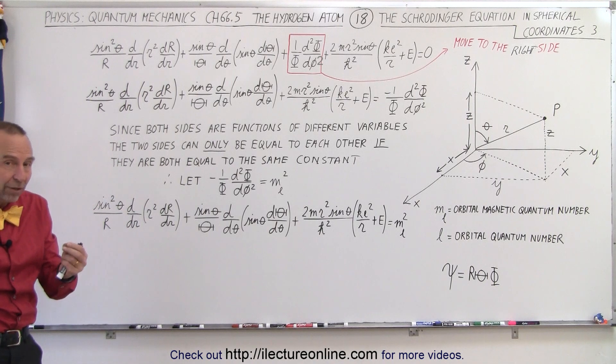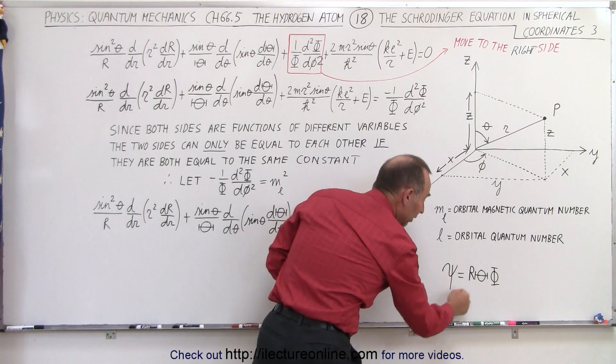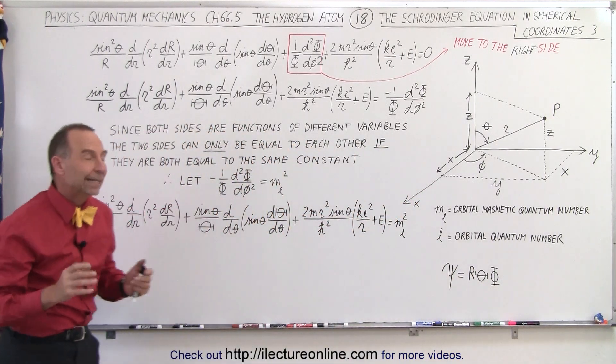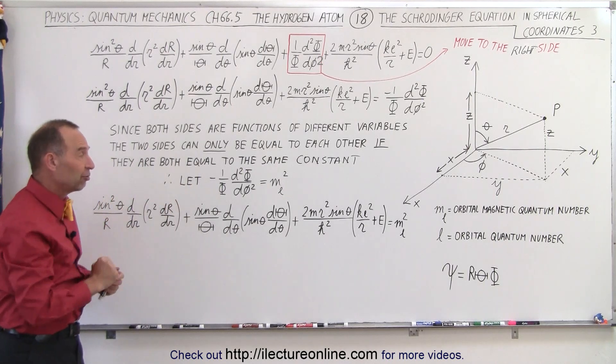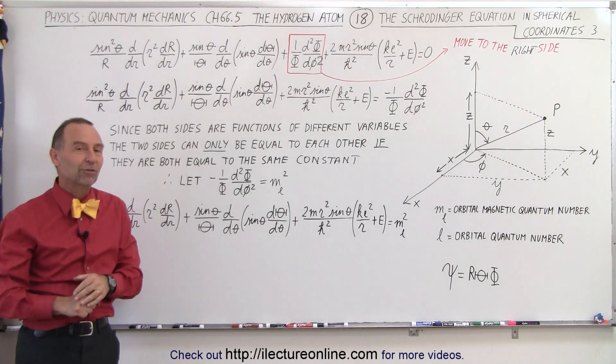So then we end up with three separate differential equations. We can solve each one of them separately, then take the solutions of the three, multiply them together, and end up with a solution for the wave function of the electron in the hydrogen atom. So that's the strategy. We have our first differential equation, we'll rewrite in different format. Now let's find the other two differential equations.